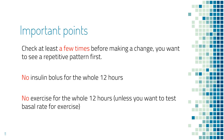A few important points. First, you would like to test it on a few days and see a consistent trend before making a change in basal rate, because blood sugar can fluctuate from day to day. Second, do not give any bolus of insulin over the whole 12 hours of fasting — otherwise, you will not be able to tell whether the change in blood sugar is due to the bolus of insulin or due to basal rate. Third, do not exercise over the whole 12 hours of fasting, because if you exercise, you will not be able to tell whether the change in blood sugar is due to exercise or due to basal rates.